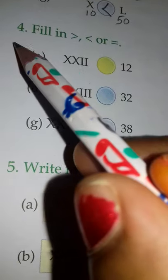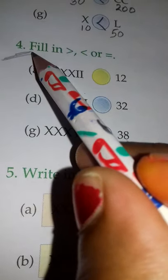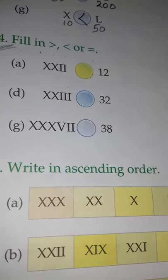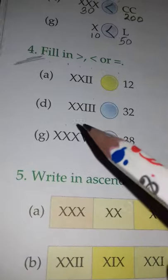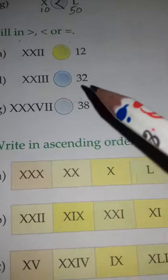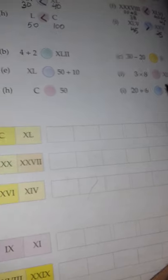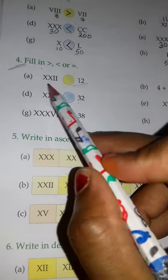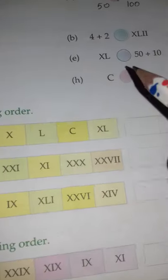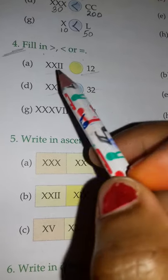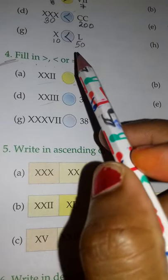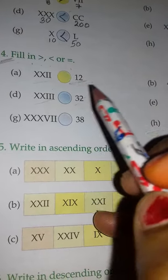Okay students, now let's move ahead with question number four: fill in greater than, less than, or equal to symbol. If you can see here, the digits are given in both Hindu-Arabic and Roman numerals. You have to find whether this side is greater or this side is smaller. One more thing is added here - equal to - so maybe both sides are equal.